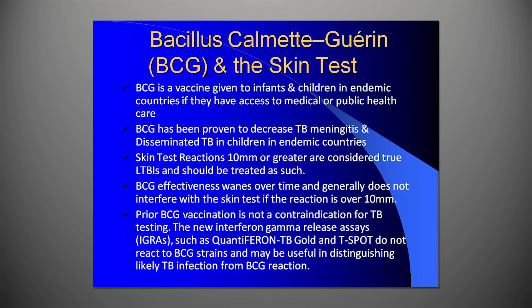Here's some information on the Bacillus Calmette-Guérin or BCG vaccine and the skin test. BCG is a vaccine given to infants and children in endemic countries if they have access to medical or public health care. The vaccine has been proven to decrease TB meningitis and disseminated TB in children in endemic countries. Skin test reactions of 10 millimeters or greater are considered true LTBIs and should be treated as such. BCG effectiveness wanes over time and generally does not interfere with the skin test if the reaction is over 10 millimeters. Prior BCG vaccination is not a contraindication for TB testing. The new interferon gamma release assays, IGRAs, such as Quantiferon TB Gold and T-Spot, do not react to BCG strains and may be useful in distinguishing likely TB infection from BCG reaction.